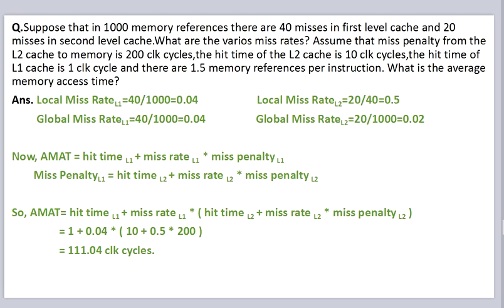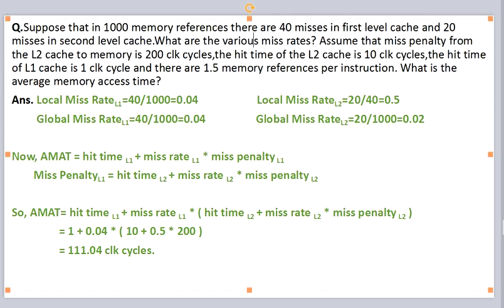We have a question: suppose in 1000 memory references there are 40 misses in the first level cache and 20 misses in the second level cache. The miss penalty from L2 cache to memory is 200 clock cycles, hit time to L2 cache is 10 clock cycles, hit time of L1 cache is 1 clock cycle, and there are 1.5 memory references per instruction. For L1, local miss rate is 40/1000 = 0.04 and global miss rate is also 0.04. For L2, local miss rate is 20/40 = 0.5, and global miss rate is 20/1000 = 0.02.